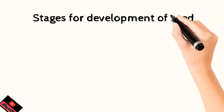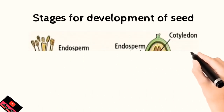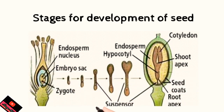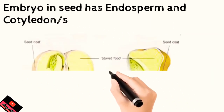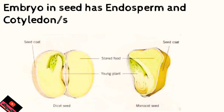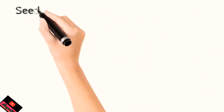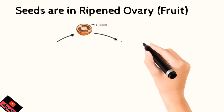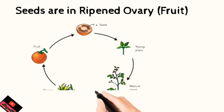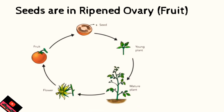The ovule becomes the seed and the ovary becomes the fruit. The endosperm is the tissue that supplies food to the seed. The cotyledon may be one or two. Seeds are in the ripened ovary — the ripened ovary is called the fruit. After dispersal, the fruit ripens and disperses the seeds, which grow into a new plant.